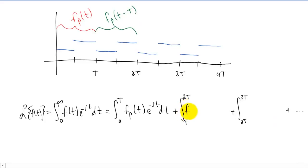So we can put that piece of the function right here into this integral. The next piece of the function is just going to be f sub p shifted to the right by 2T units. So the infinite series of integrals that we get when we use the integral definition of the Laplace transform is going to look something like this.